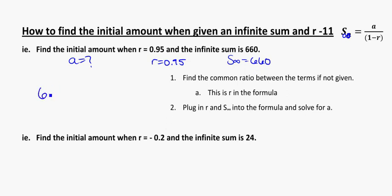So the infinite sum is equal to 660. And that's equal to a, which I don't know, divided by 1 minus 0.95. Put that into solver or into your calculator. And you should get a here is equal to 33. So we're saying the initial amount for this particular circumstance was equal to 33.